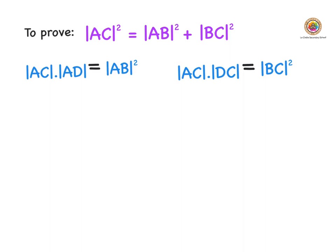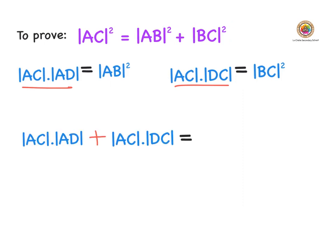Reminding ourselves that we want to prove AC squared is equal to AB squared plus BC squared. Here we have our equation from the first step — AC times AD equals AB squared — and here we have our equation from the second step — AC times DC equals BC squared. Adding the two left-hand sides gives us: AC times AD plus AC times DC equals AB squared plus BC squared.